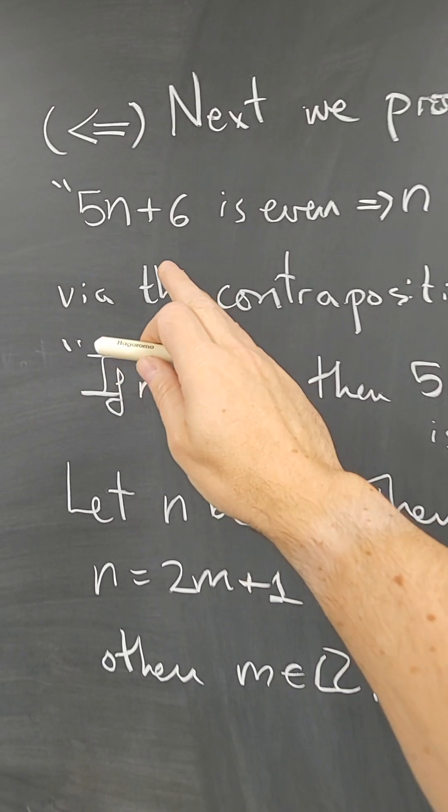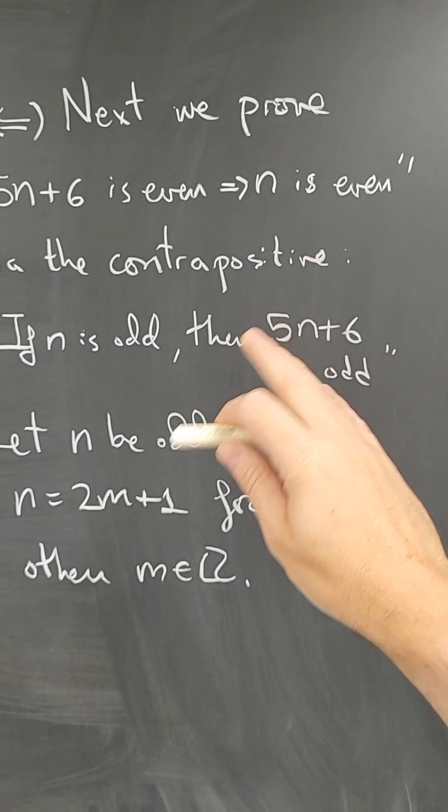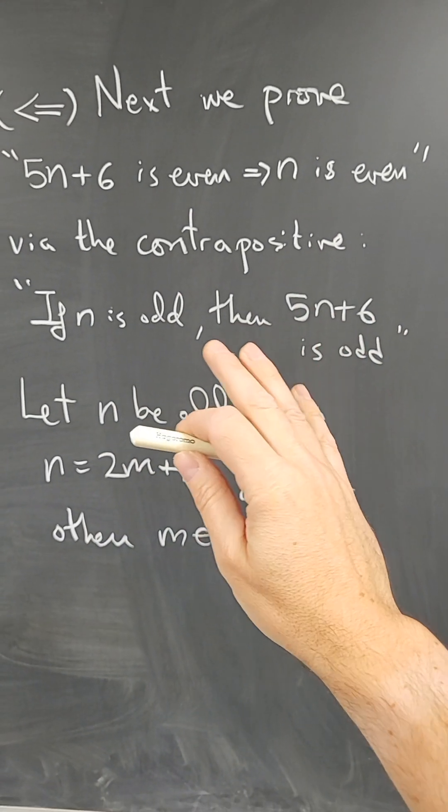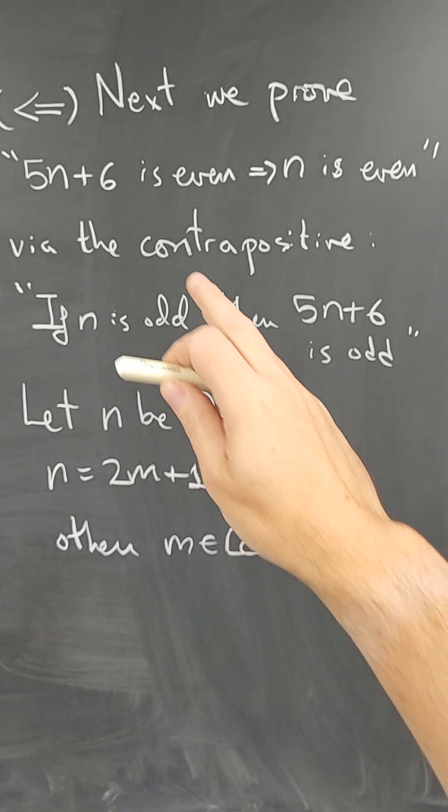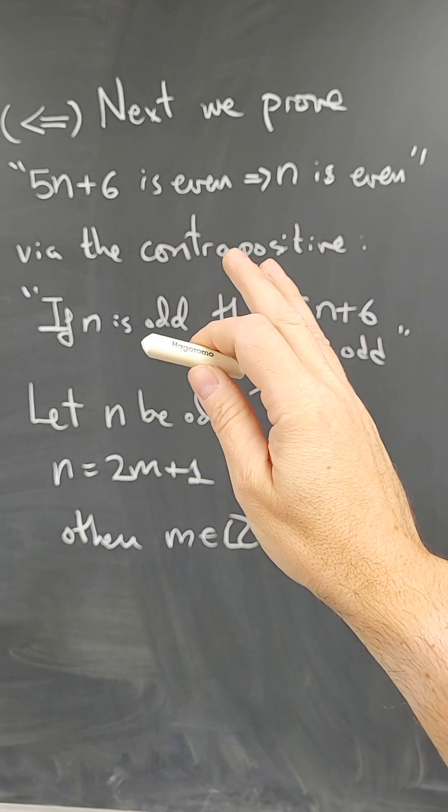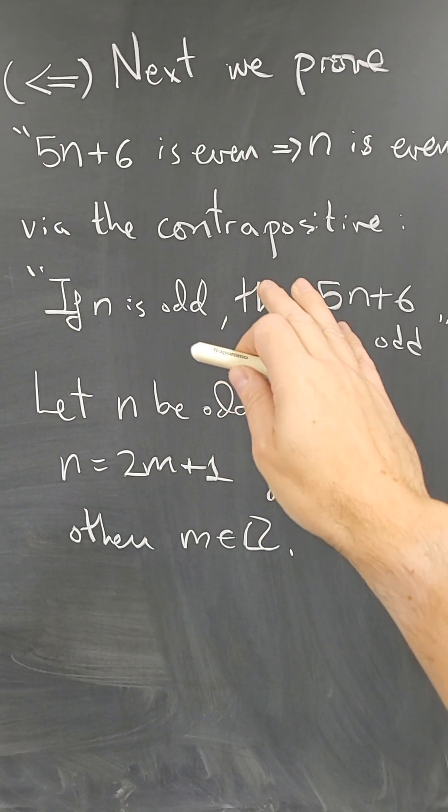Now, for the converse, we need to prove that if 5n plus 6 is even, then n is even. And this is a new proof, and I can choose to prove it in any method I want. So it could be a direct proof, or it can be something like the contrapositive. So I'm going to do it using the contrapositive.